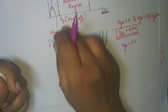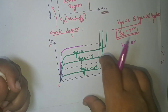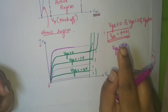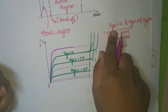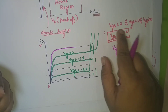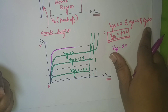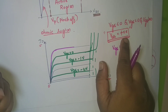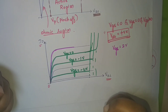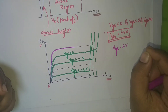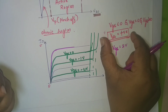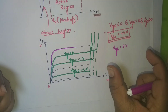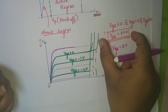Coming to the second drain characteristic — varying the VGS values — I will vary VGS in three different cases: VGS less than 0, VGS greater than 0, and VGS equal to 0. Here, I will take VDS as a positive voltage, meaning I want the channel to conduct. When I want the channel to conduct, I take VDS as positive.